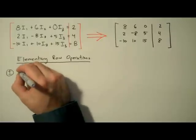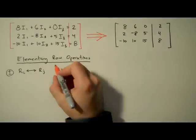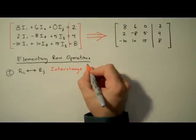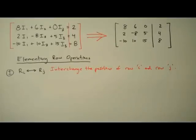Our first tool is called row switching, notated with a left-right arrow between two rows. For our purposes, we'll use generic rows i and j. This notation denotes that we interchange the positions of row i and row j. Simple enough.